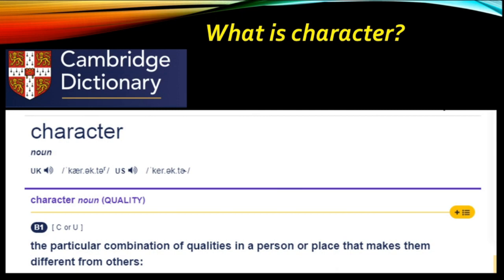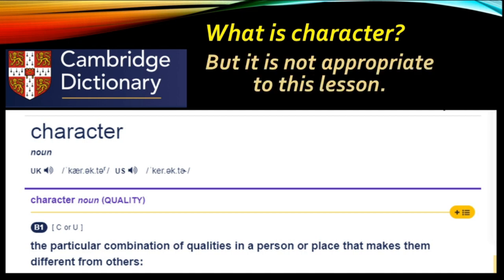Let us first discuss what a character is. I am giving the definition from the Cambridge Dictionary, which states: 'the particular combination of qualities in a person or place that makes them different from others.' This definition is given in a general perspective. It is the correct meaning for character, but for biology this definition is not entirely appropriate.